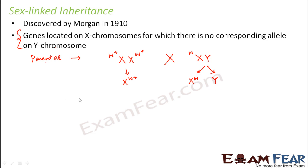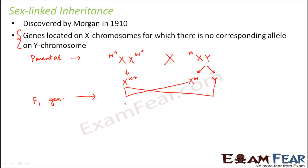The male can produce two types of gametes: one is the X chromosome carrying the white-eye colour gene, and the other is the Y chromosome with no trait for eye colour. So in the F1 generation, one possibility is this X combines with that X, and the other possibility is this X combines with the Y. One possibility gives a female which is red-eyed; the other gives a male which is also red-eyed. So in the F1 generation, all offspring are red-eyed — that is what happened in Morgan's experiment.